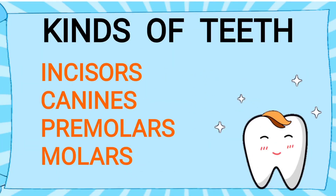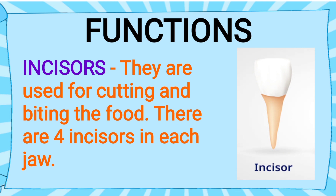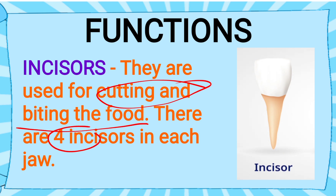The different types of teeth in our mouth are: incisors, canine, premolars, and molars. Let's see the functions of each one. First, incisors: incisor teeth are used for cutting and biting. They are present in the front of our mouth. They are 4 in number in each jaw, so in total they are 8 in number.